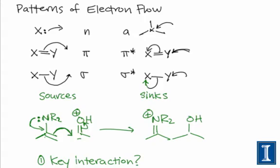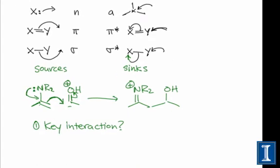Typically, the key interaction can be found wherever there's a sigma bond forming or a sigma bond breaking.